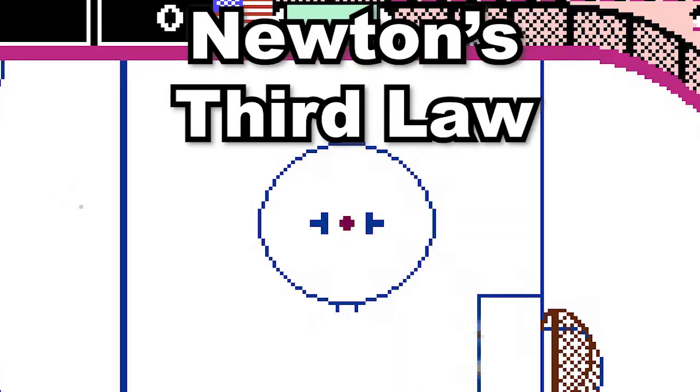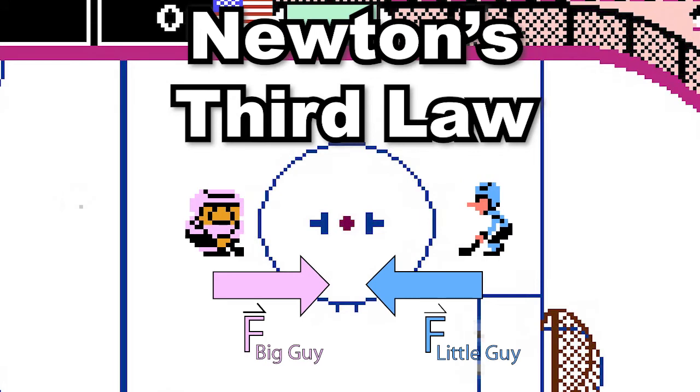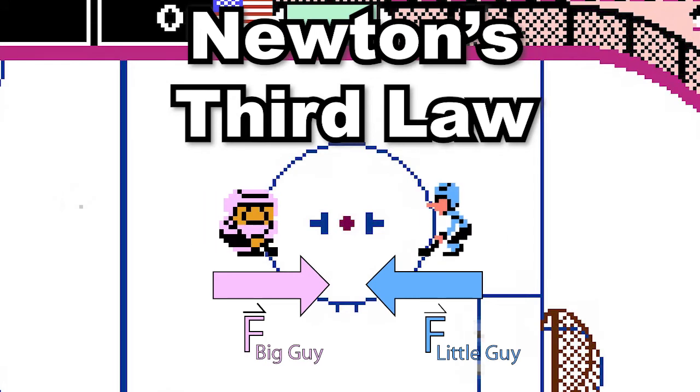Newton's third law tells us that if one object, like this big guy, applies a force to a second object, like this little guy, the second object applies an equal magnitude, so same size, but opposite direction force back to the first object. Those two forces are the same size and in opposite directions.